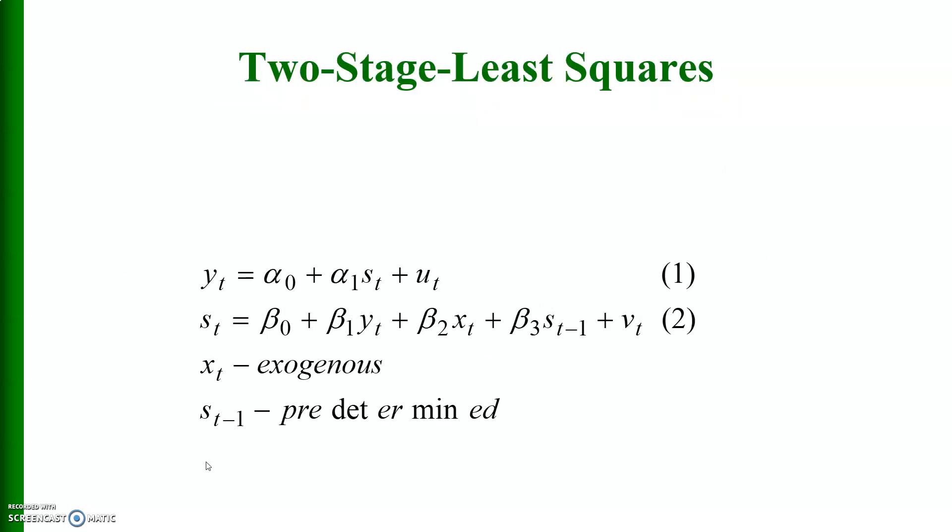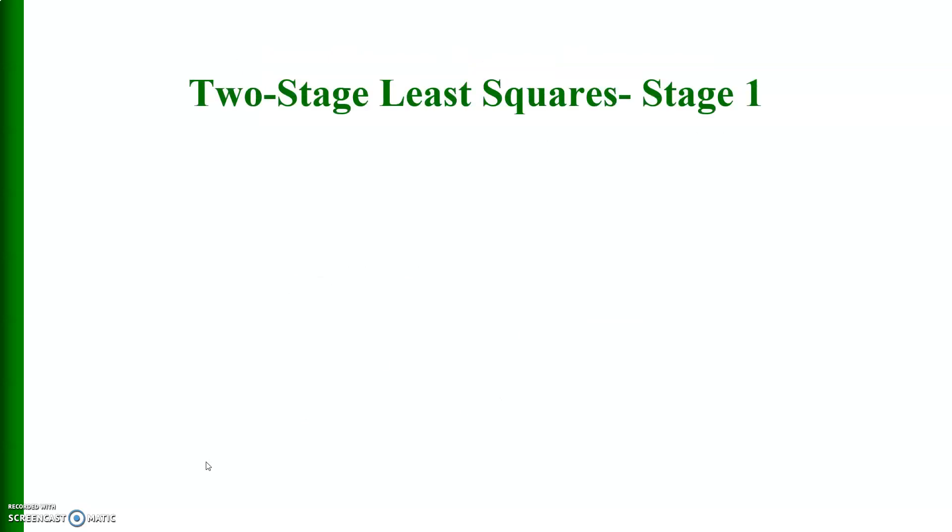Two stage least squares given the following model, where equation 1 is over identified. And there are two equations, x_t is exogenous, s_t minus 1 is predetermined.